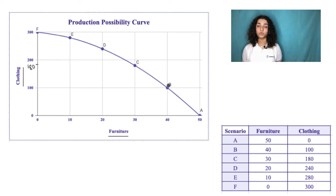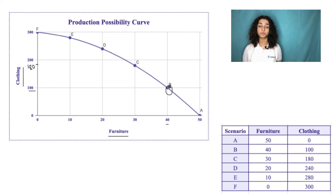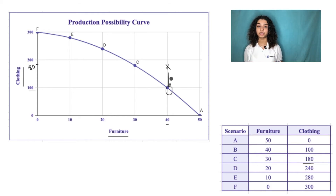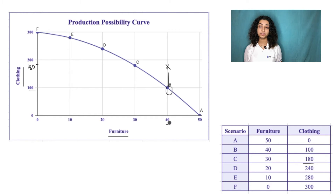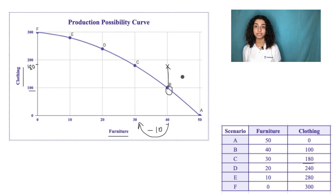Let's focus first on scenario B, which states that our economy is producing 40 units of furniture and 100 units of clothing. Now, if clothing becomes more profitable, we might decide to increase clothing production from 100 units to 180 units. When we make this change, we observe a decrease in the amount of furniture our country is capable of producing, remembering that any point outside this curve — this frontier — is unattainable with our current resources. So in the case that we do decide to increase our output of clothing, we must make a trade-off, moving from 40 to 30 units of furniture, or sacrificing 10 units of furniture. The opportunity cost of increasing your output of clothing by 80 units is 10 units of furniture — the quantity we are sacrificing.